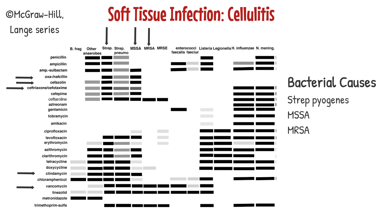Let's design an empiric regimen for this infection by picking the narrow-spectrum antibiotics that cover these pathogens. As you can see in this antibiogram, oxacillin, cefazolin, ceftriaxone, and clindamycin all cover strep pyogenes and MSSA, but all fail to kill MRSA, which requires vancomycin.